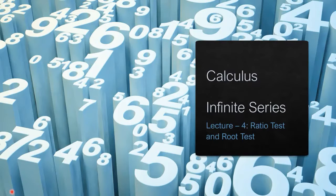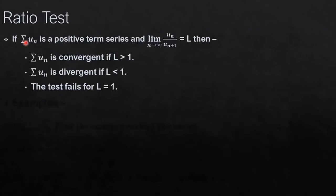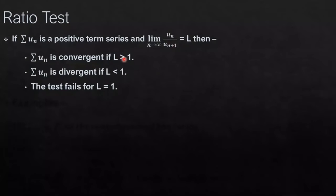First we will define what the ratio test is. It states that if u_n is a positive term series and the limit as n tends to infinity of u_n upon u_{n+1} is l, then the series is convergent if l is greater than 1, divergent if l is less than 1, and the test fails for l equal to 1.